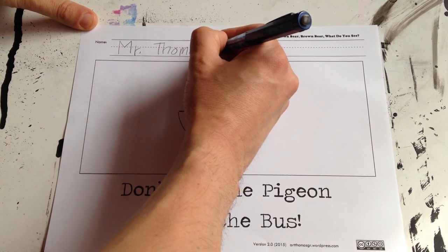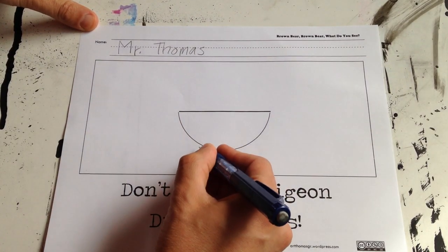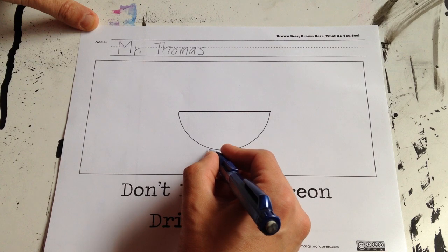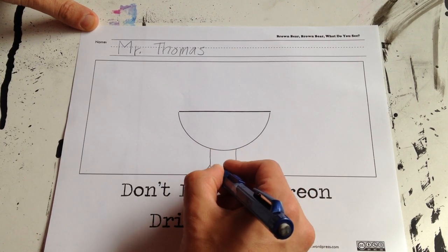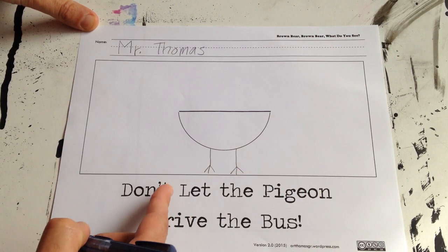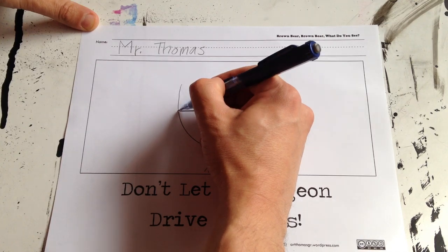And then we're going to use this half circle here to draw the pigeon. So then you're going to take two lines here for the legs. And we're going to make some little feet with three lines. And then the neck is two lines.